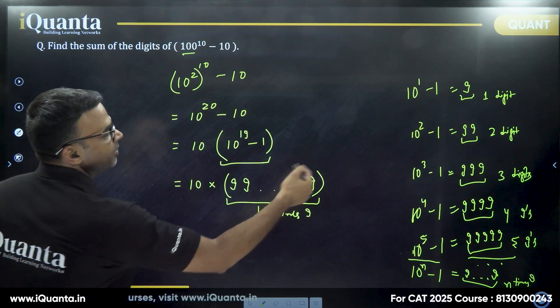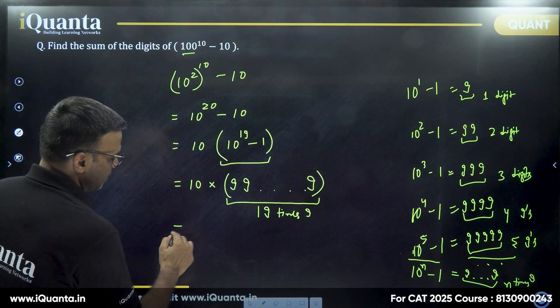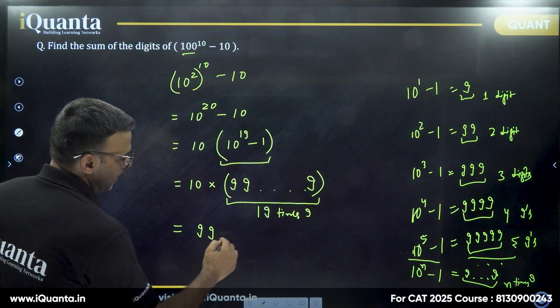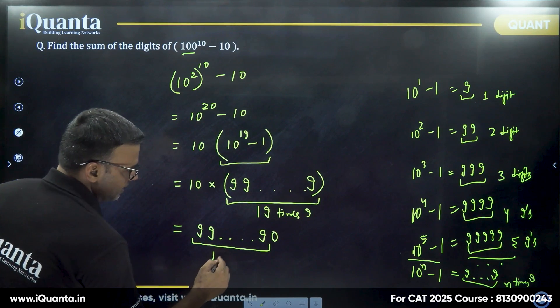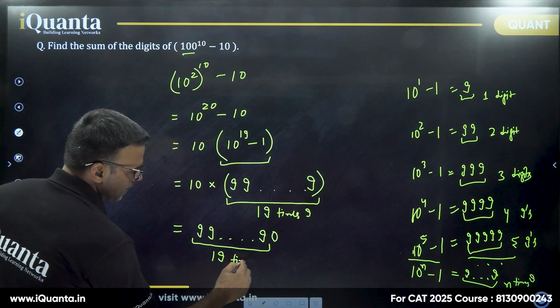So when you multiply by 10, there will be a 0 in the end. So actually the number will be 999, and in the end, a 0. And these are how many nines? 19 times 9.